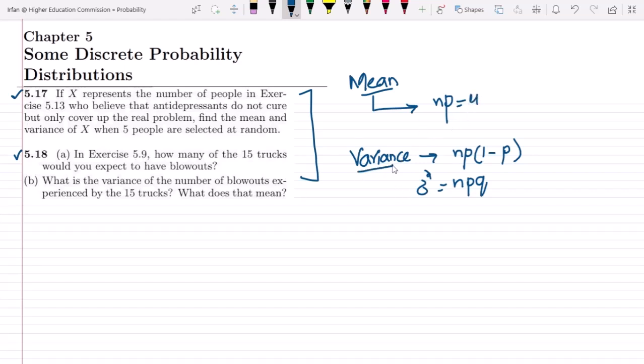So this is what we have to utilize today. In question 5.17, if X represents the number of people in exercise 5.13 who believe that antidepressants do not cure but only cover up the real problem, find the mean and variance of X when 5 people are selected at random. So here in question 5.17, the number of items or number of people are basically 5.